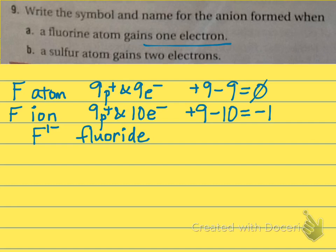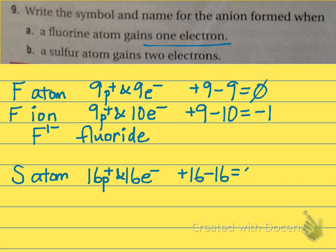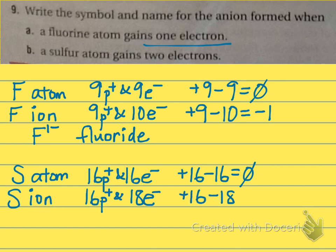Letter B: a sulfur atom gains two electrons. Sulfur has atomic number 16, so 16 protons and 16 electrons, charge of zero. As an ion, it still has 16 protons but gains two electrons, giving 18 electrons. Plus 16 minus 18 gives a charge of negative 2, so this is S with a charge of negative 2. Sulfur loses its ending and gets an "-ide," so it is called sulfide.